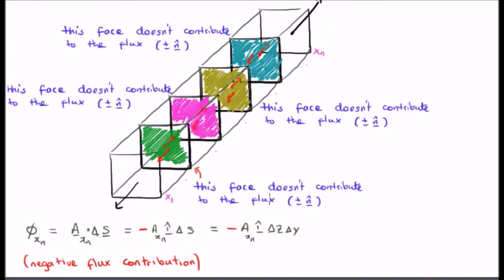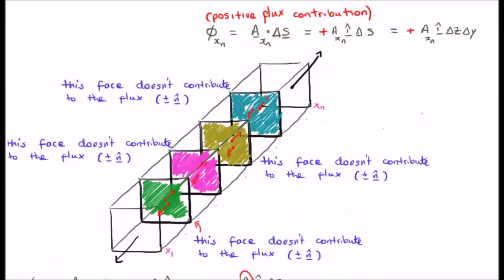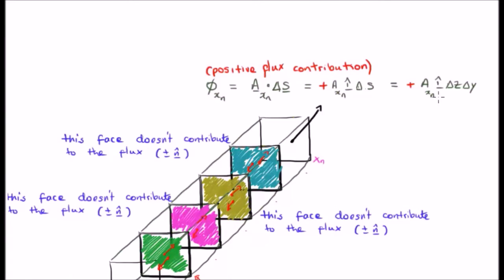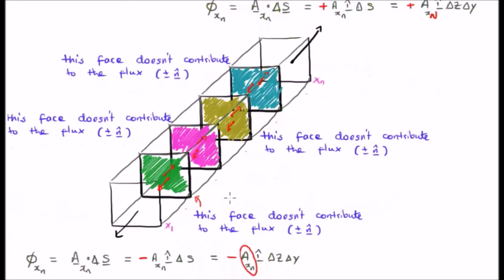This is exactly what we saw already. So here I've written the vector field as A sub x n. And at the very top it's A sub x n. I probably should have, maybe, I don't know, I might call that capital N and I might call this small n. It doesn't really matter.